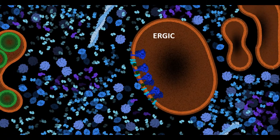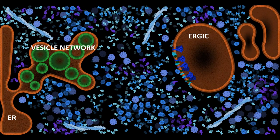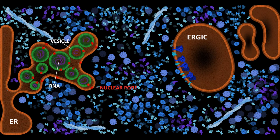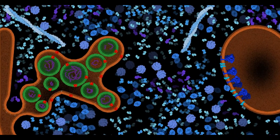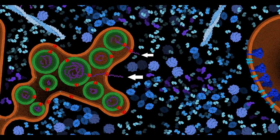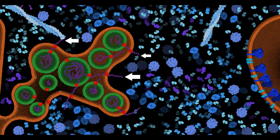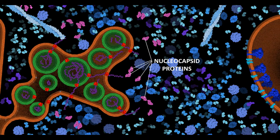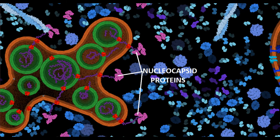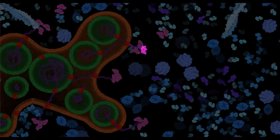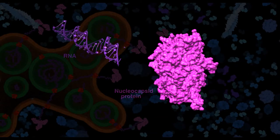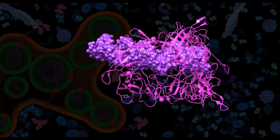While the S, M, and E proteins are being translocated through the cell, the viral RNA is packed into double-membrane vesicles in the vesicle network between the ER and the ERGIC. Once the RNA is ready to be packed into the viral particles, it exits the network through membrane pores and will bind to another structural protein, the N protein,